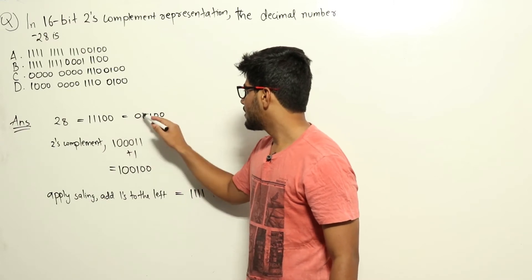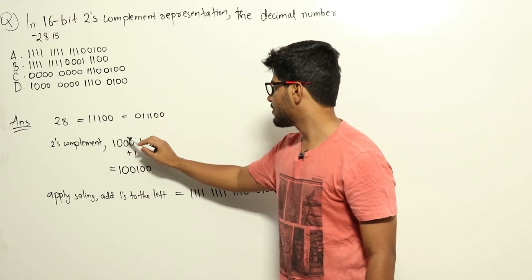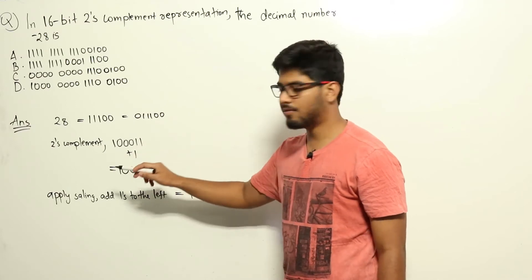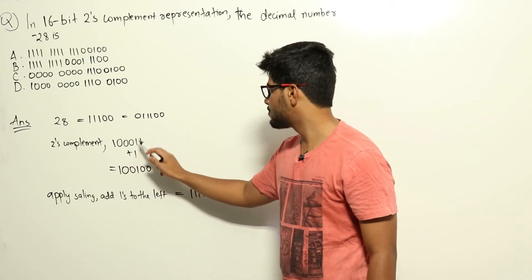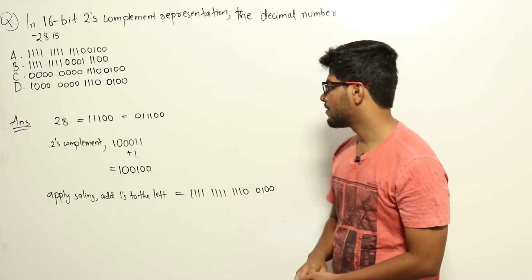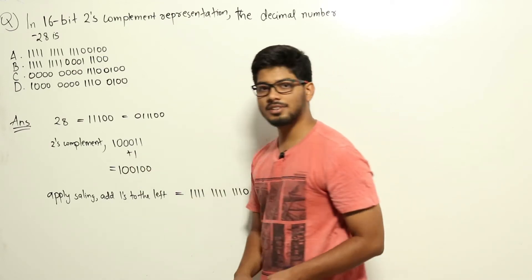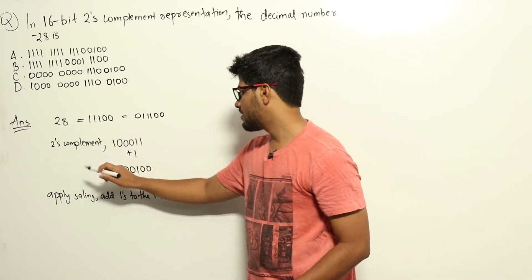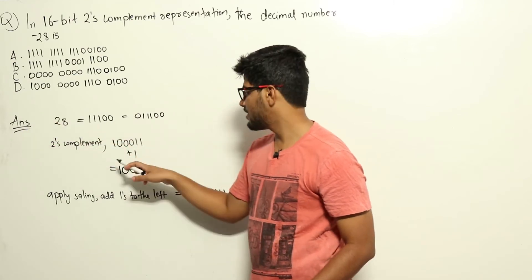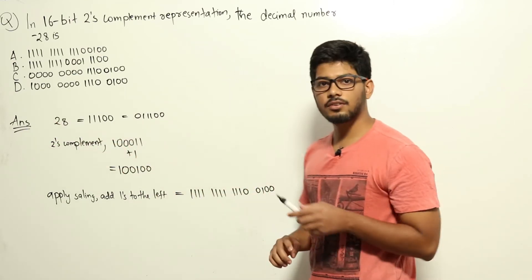Now the 2's complement of this number: we take the complement of each digit — 1 0 0 0 1 1 — and then we add 1 to it, giving us 1 0 0 1 0 0. This is the 2's complement representation of minus 28. We started from 28 and reached the 2's complement representation of minus 28.